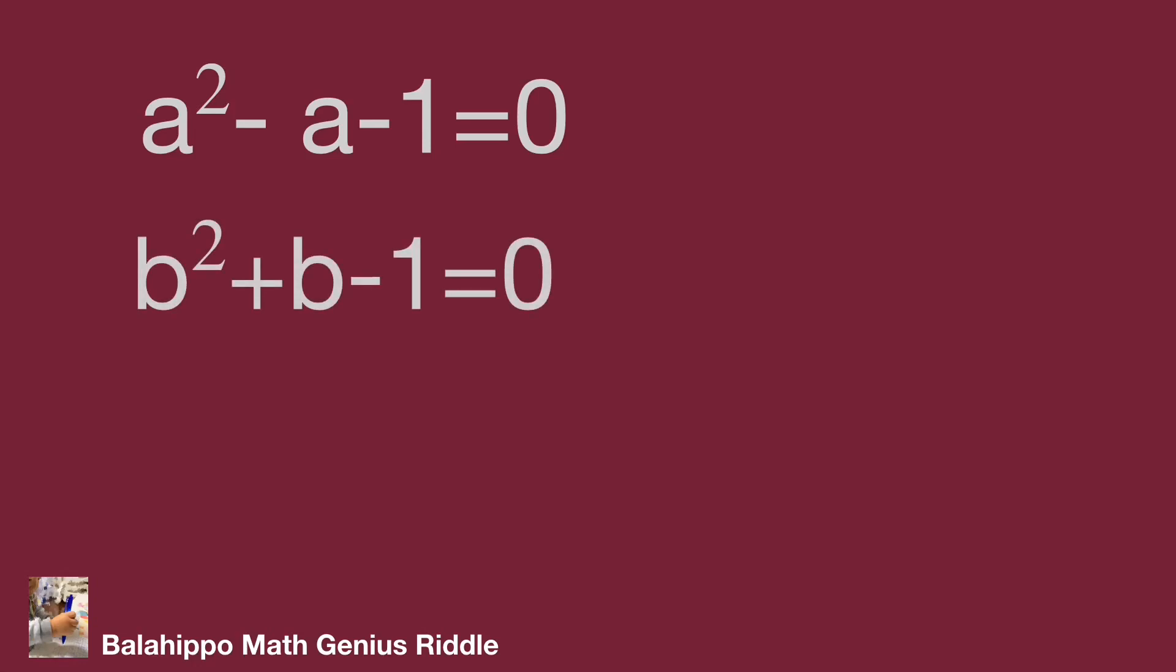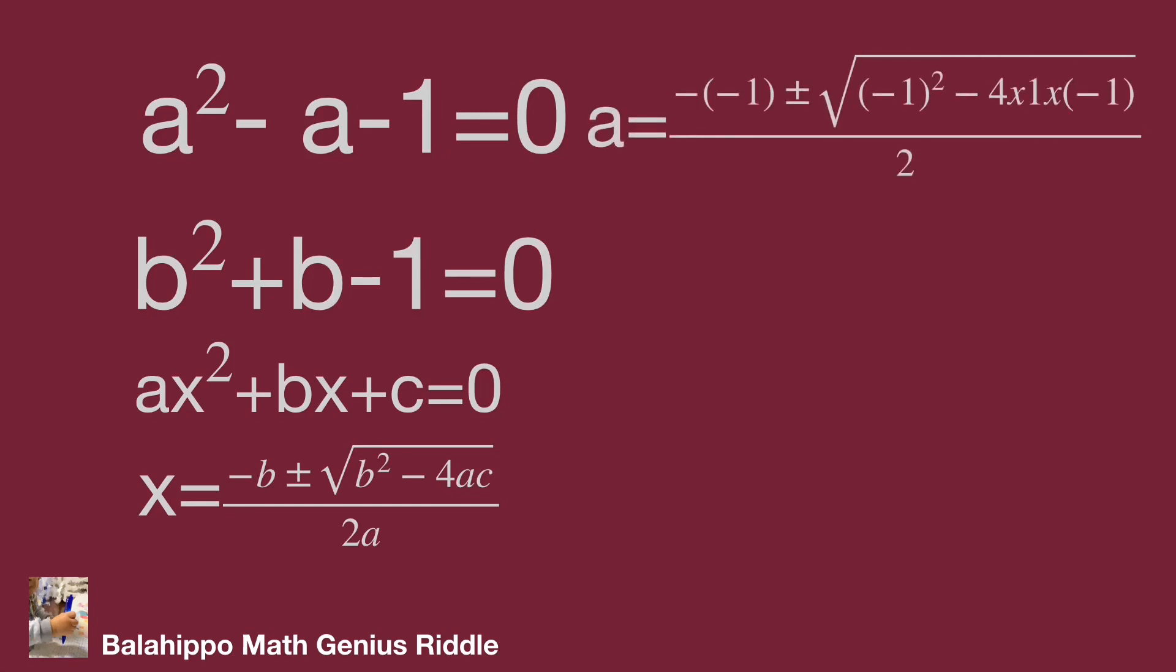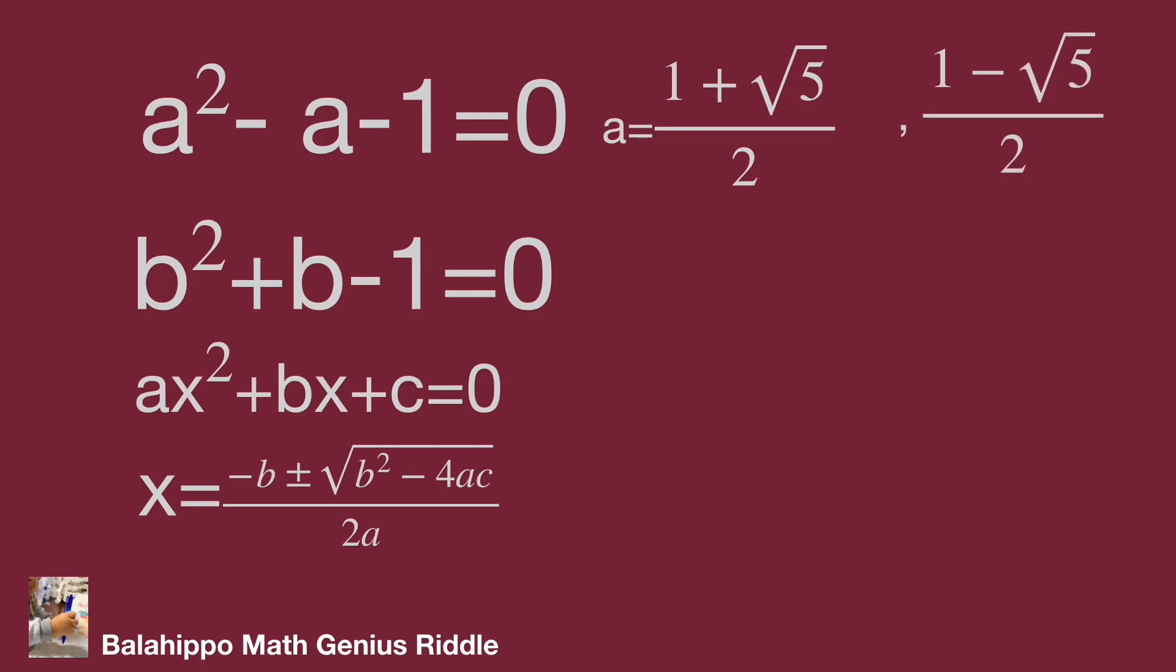These are quadratic equations. To find x value from a x squared plus b x plus c equal to zero, x equal to minus b plus or minus square root of b squared minus four a c over two a. Adapt the formula to get a, a equal to one plus square root five over two or one minus square root five over two.